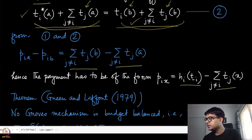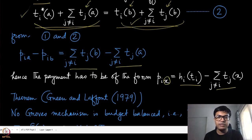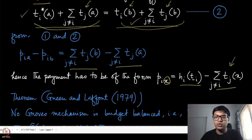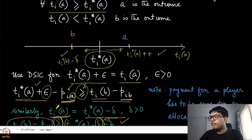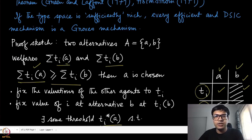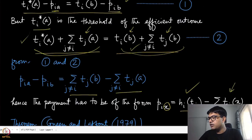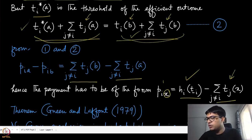Essentially, the payment for any outcome x can be written as: one term that does not depend on agent i's type at all, plus a second term that is the sum of valuations of all other agents at that outcome. If you think carefully, this is exactly the Groves payment. This is not a full proof but an intuition for why the payment must be in the Groves class when we have efficient and DSIC mechanisms. This result extends to more than two alternatives.